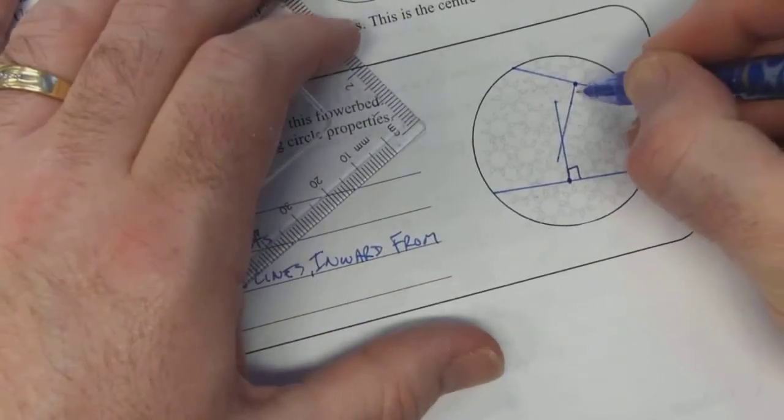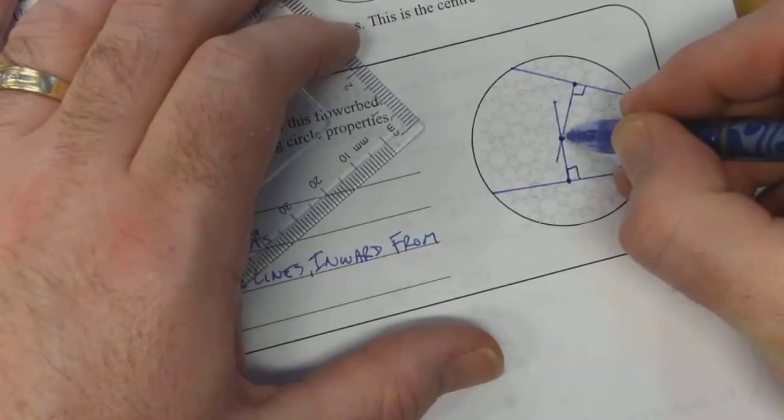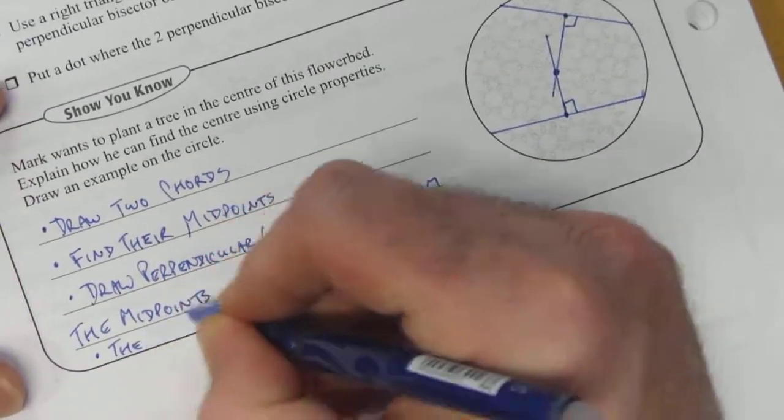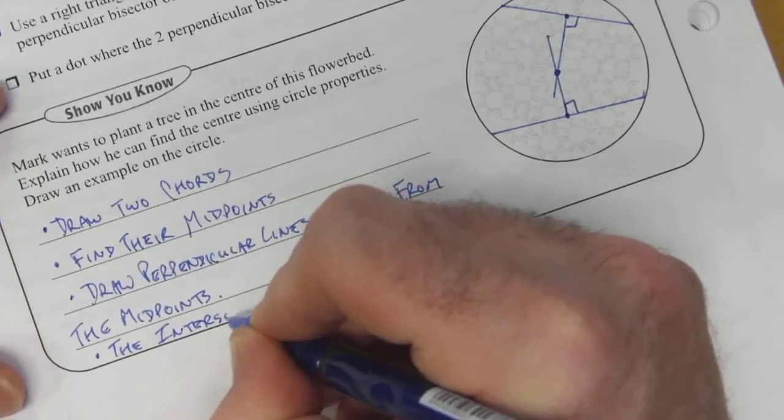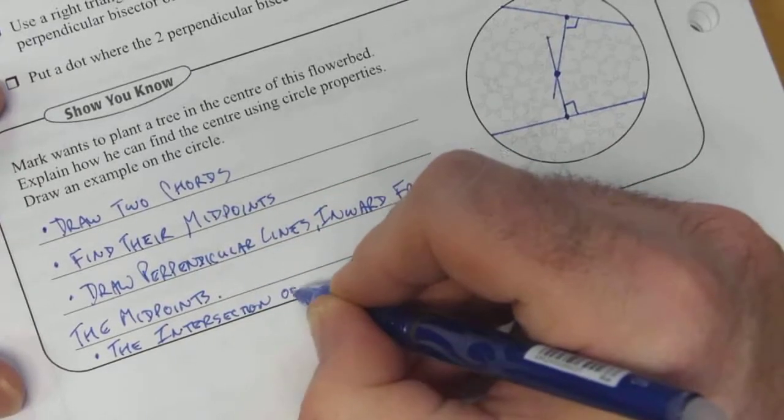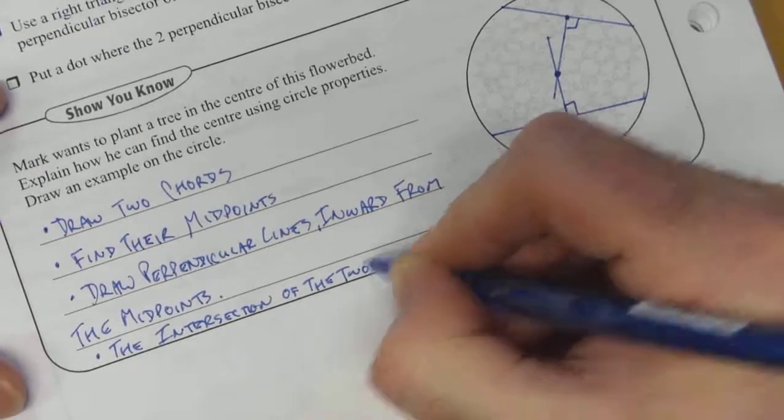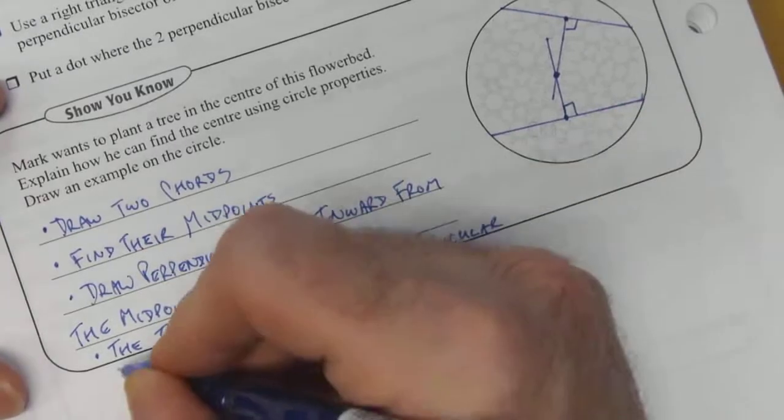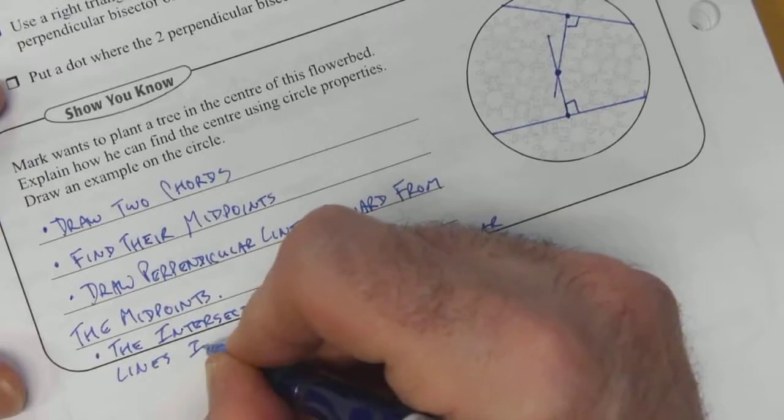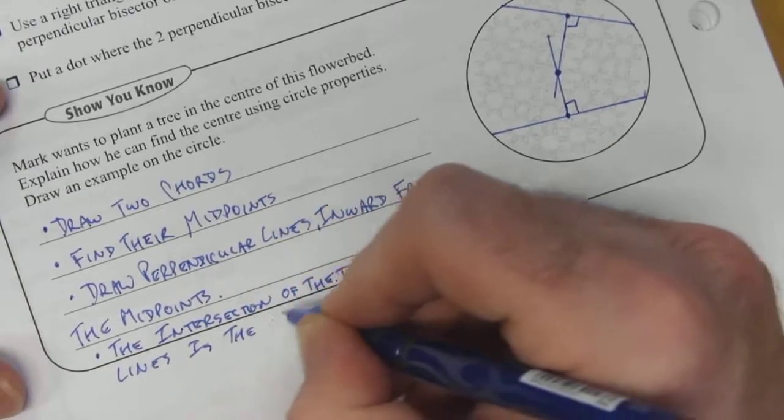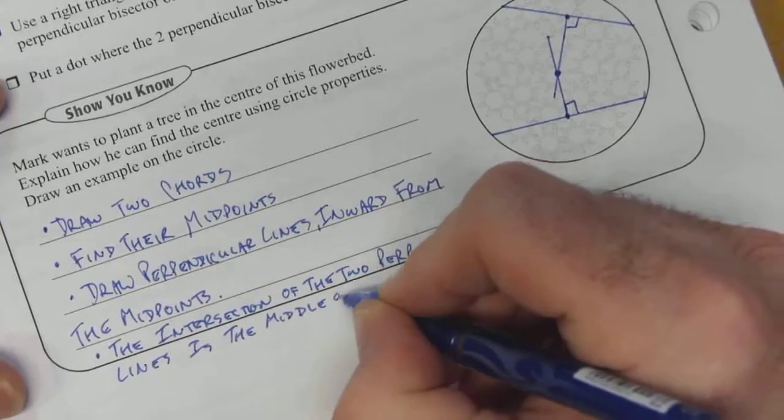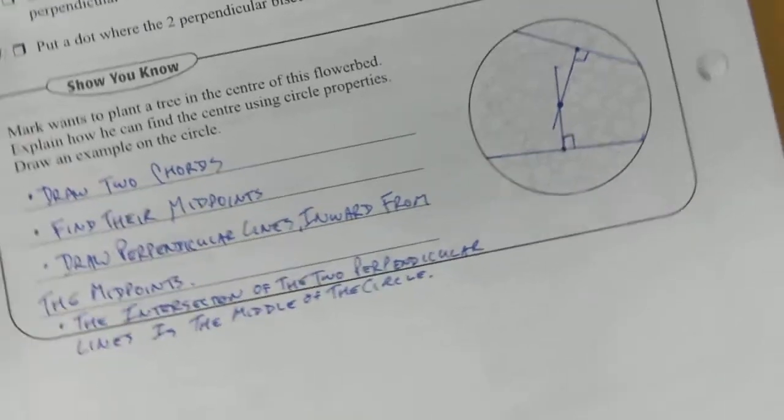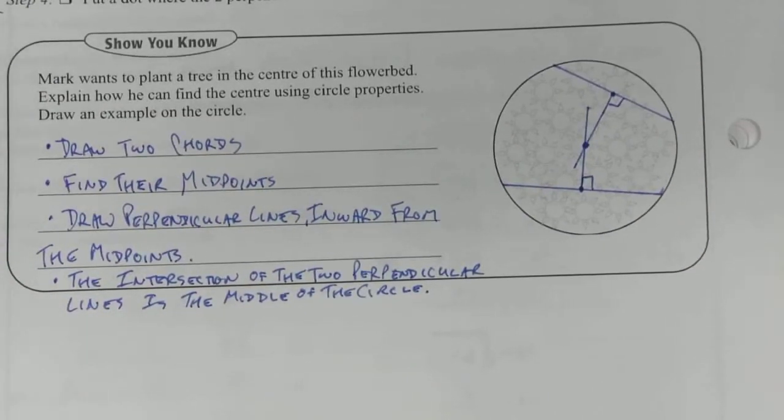So, that should be perpendicular. That should be perpendicular, which makes this the center of my circle. The intersection of the two perpendicular lines is the middle. The circle. And that's your solution for the show you know.